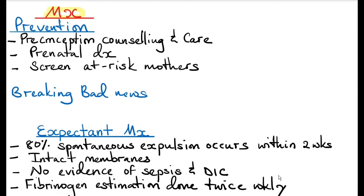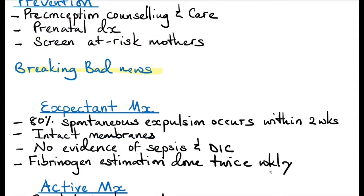Management: prevention is always better. If a patient has a history of spontaneous abortions or intrauterine fetal death, offer preconception counselling. In their next pregnancy, do prenatal diagnosis, perform the investigations mentioned above, and screen at-risk mothers during antenatal care.